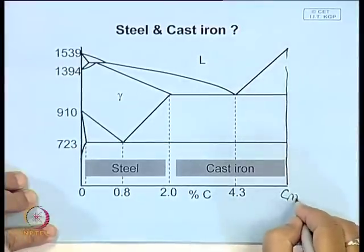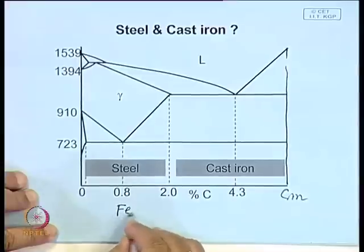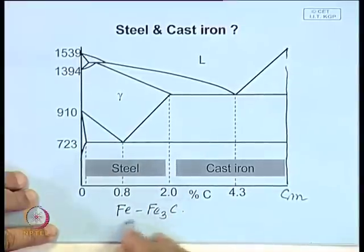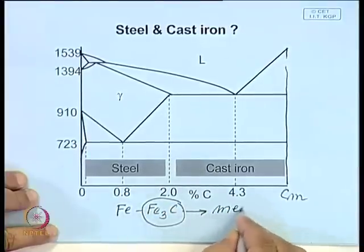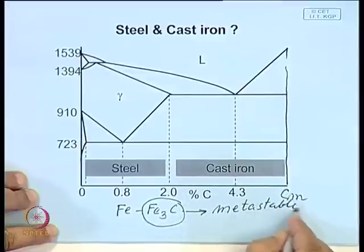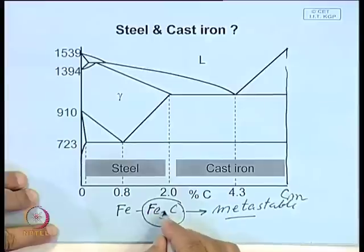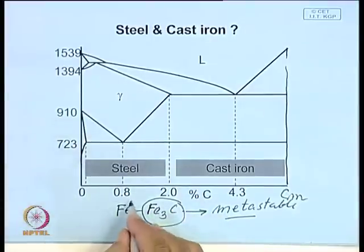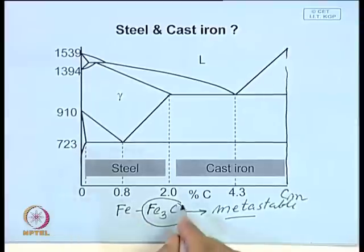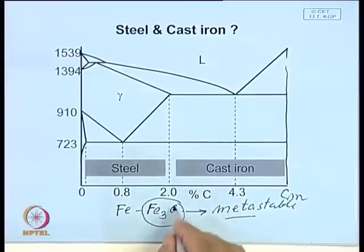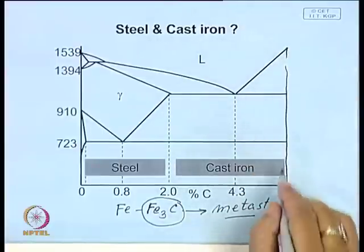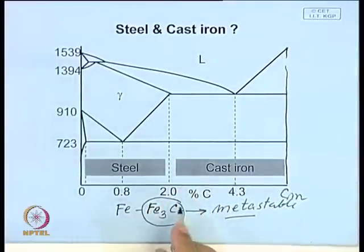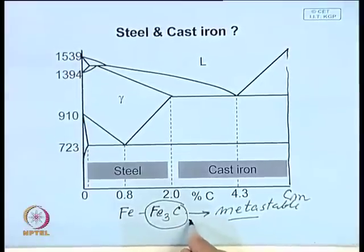This diagram is also known as the iron-cementite phase diagram or the Fe₃C iron carbide phase diagram. Cementite is a metastable phase. It is crystalline and has a complex orthorhombic structure with a large number of atoms per unit cell — unlike pure BCC iron which has only 2 atoms per unit cell. Its melting characteristics are exactly like a pure compound, so we call it cementite.